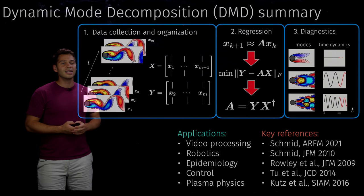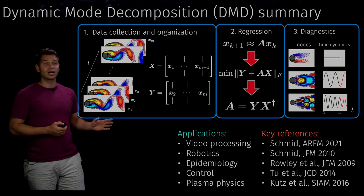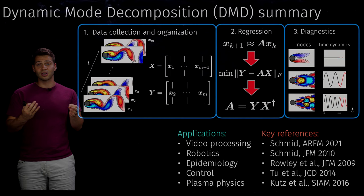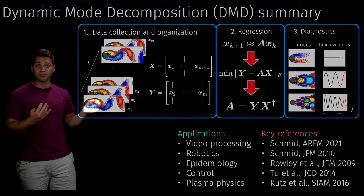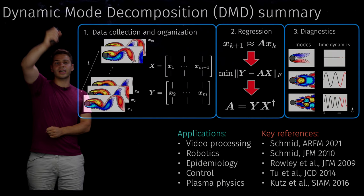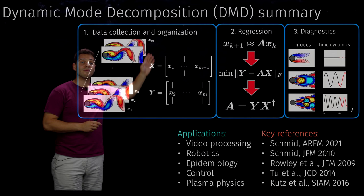DMD has three main steps, and like any machine learning or data-driven algorithm, the first step is the collection and organization of data. DMD works with data arranged as snapshots of a system at different points in time. In this case the system is flow past a cylinder, and the snapshots are vorticity measurements at each point on the spatial grid. These X vectors are very tall — tens or hundreds of thousands of entries — and we take M snapshots of the system.